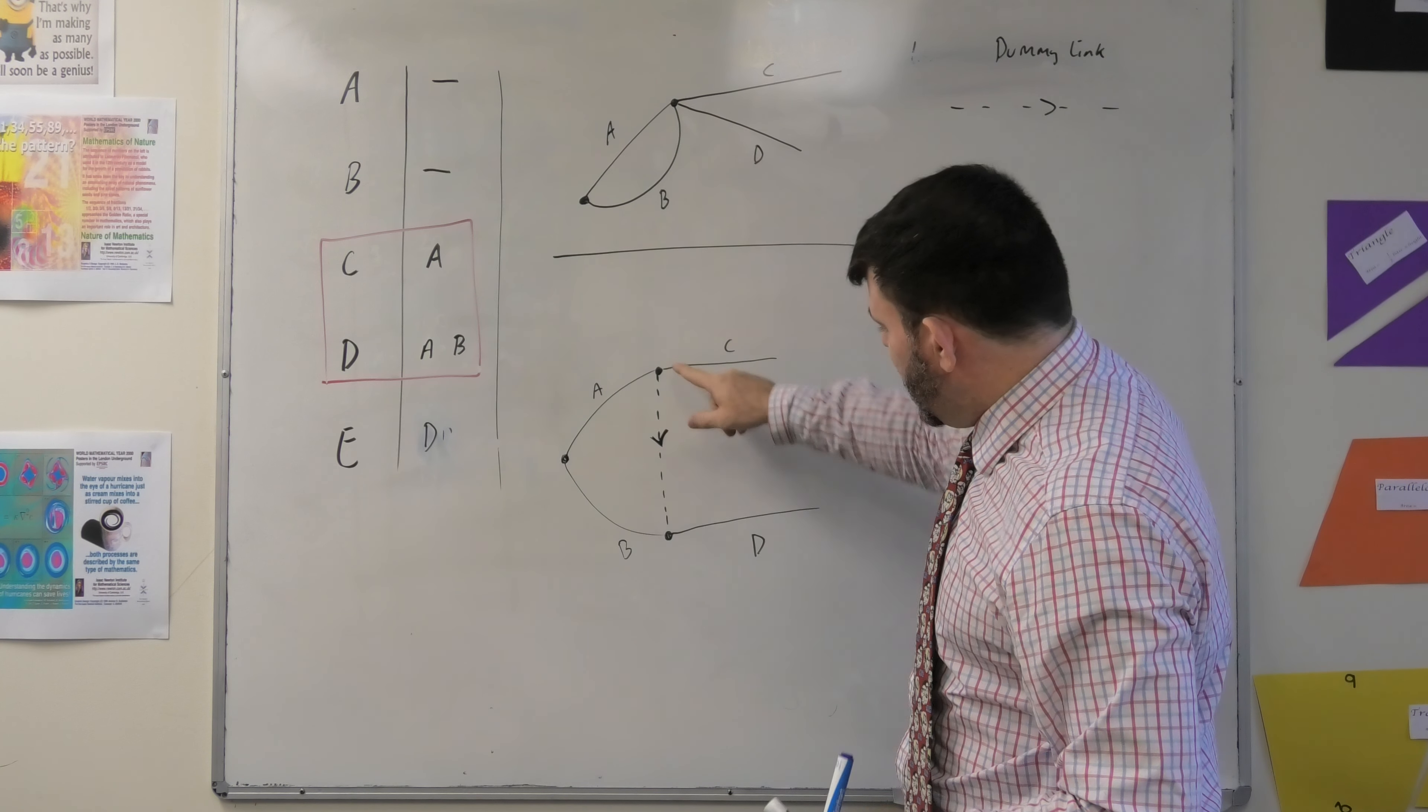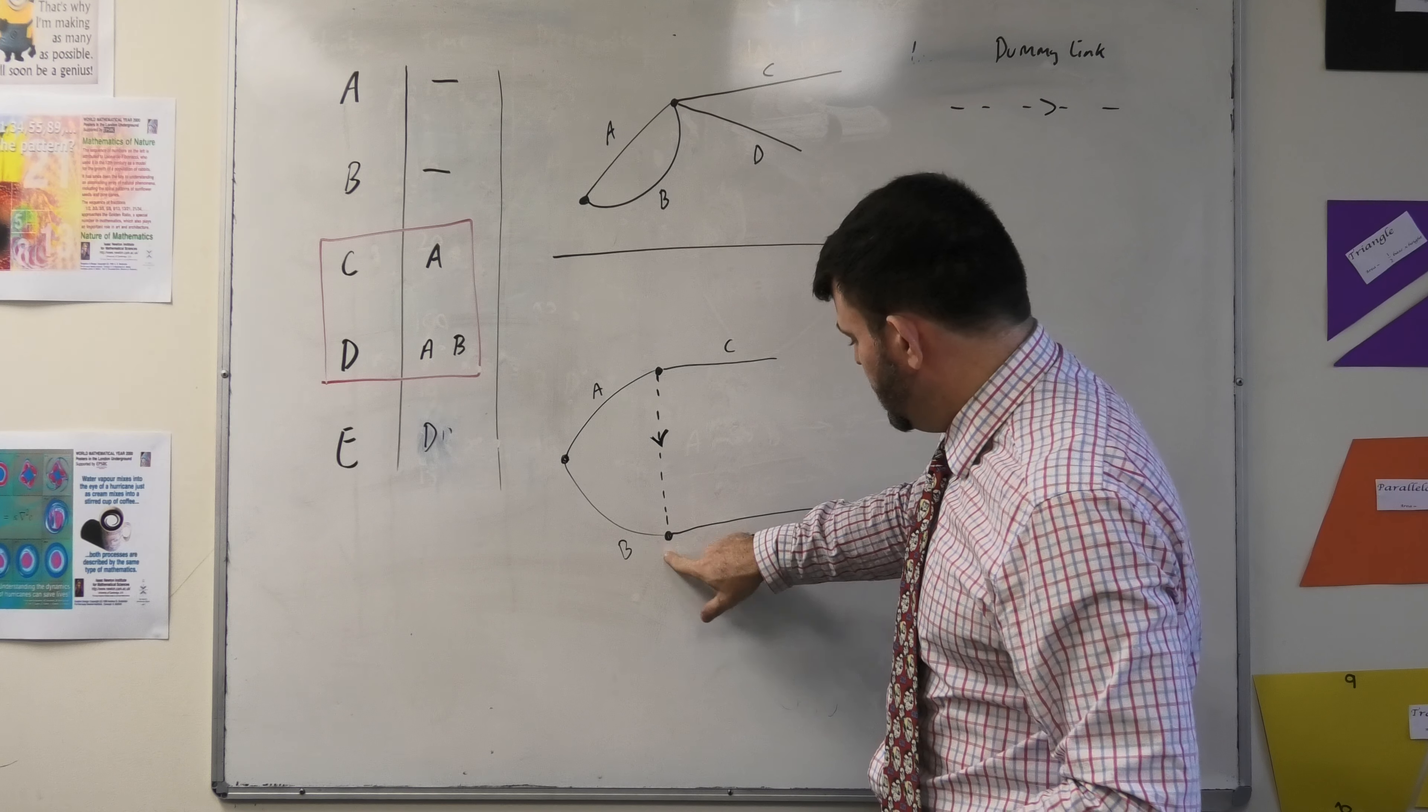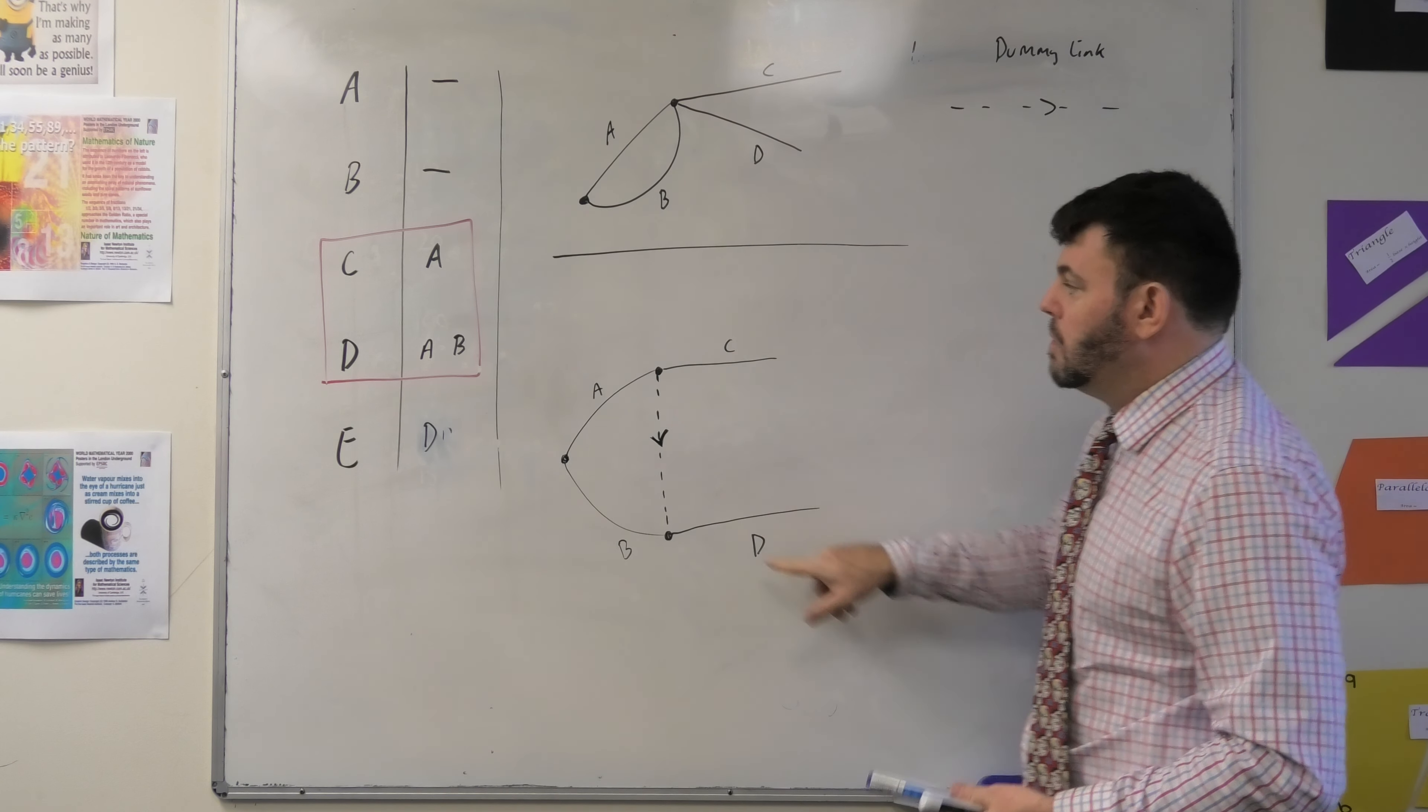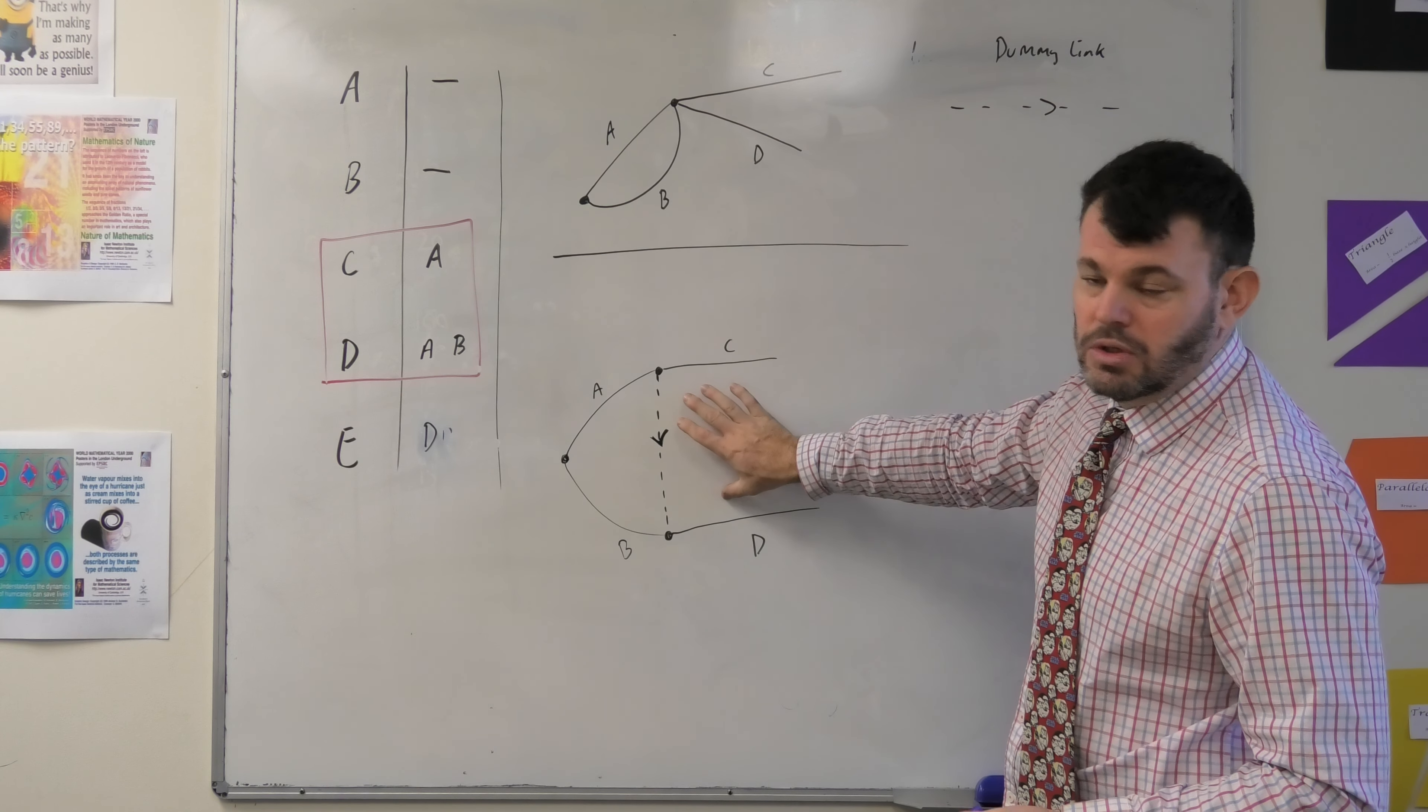The dummy network allows that to say, look, we need a connection from A through to B, so D can actually show dependence on that. And that's what the dummy link looks like itself.